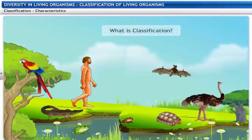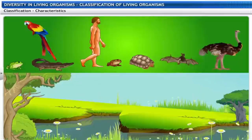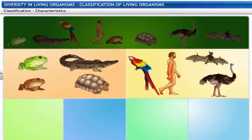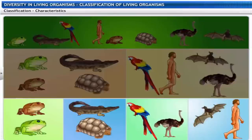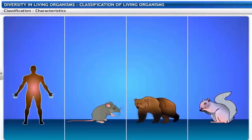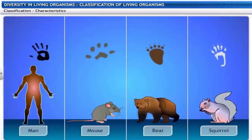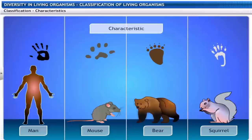What is classification? Classification is the division of living organisms on the basis of characteristics into groups and subgroups. A characteristic may be a particular form or function — for example, some animals have five fingers. The process of classification continues using a new characteristic each time.